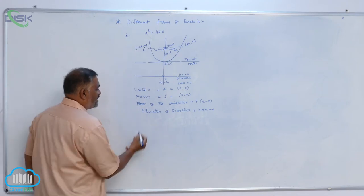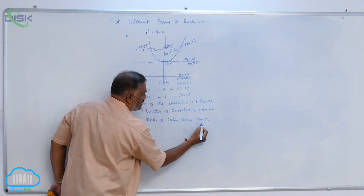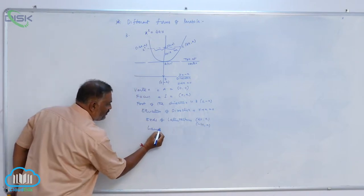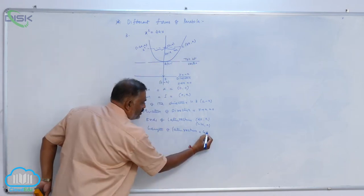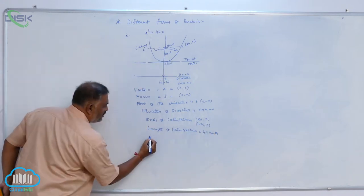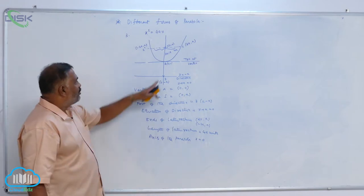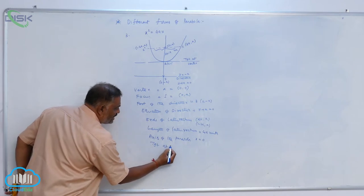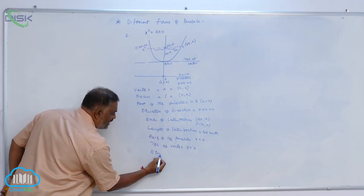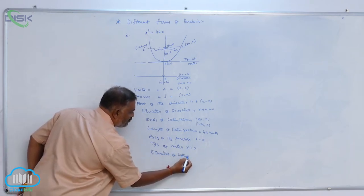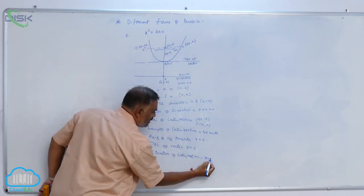Then come the ends of the latus rectum: (2a, a) and (−2a, a). Then the length of the latus rectum is 4a units. The axis of the parabola is the y-axis, that is x = 0. The tangent at the vertex is the x-axis, y = 0. The equation of the latus rectum, which is parallel to the x-axis, is y − a = 0.